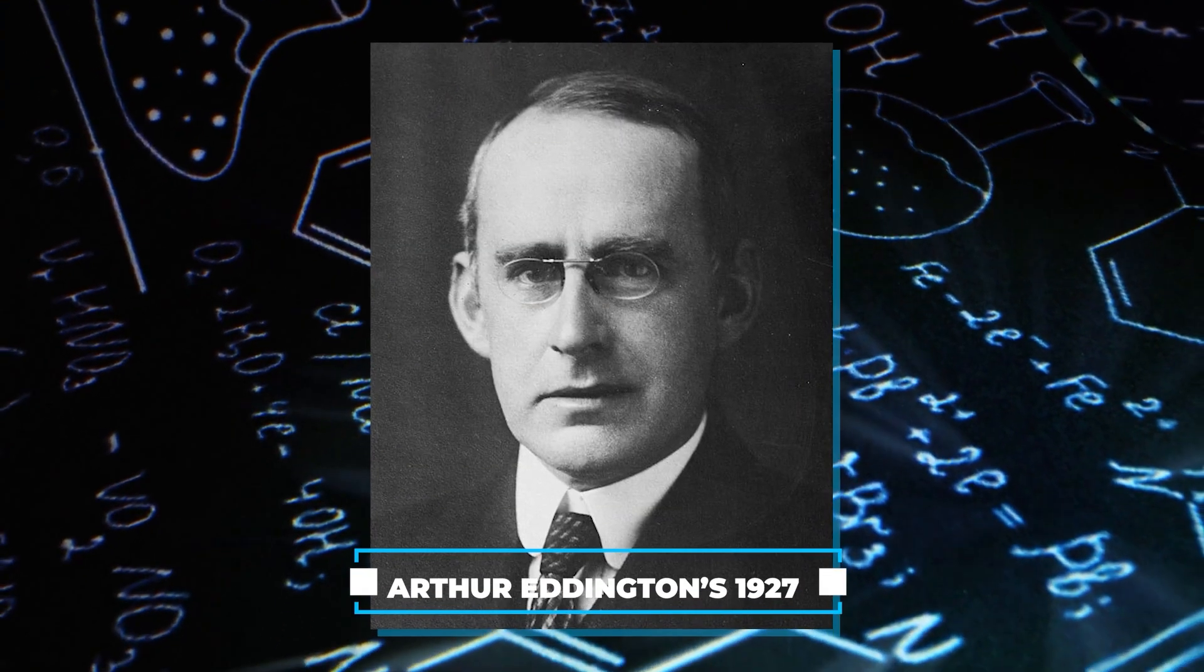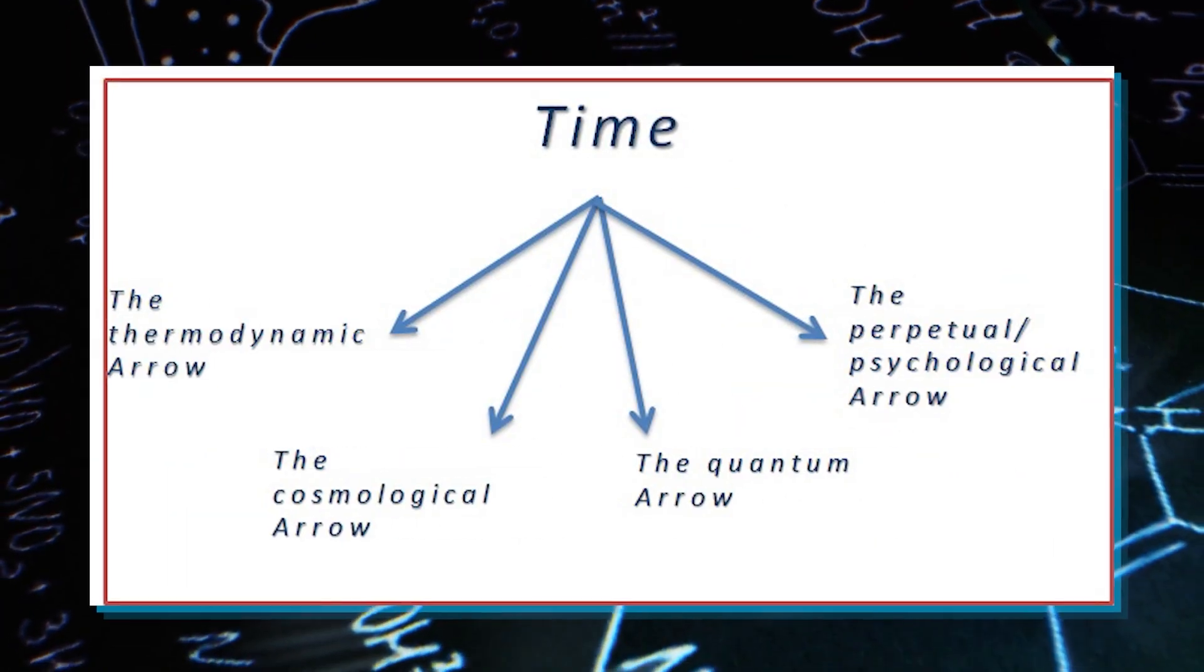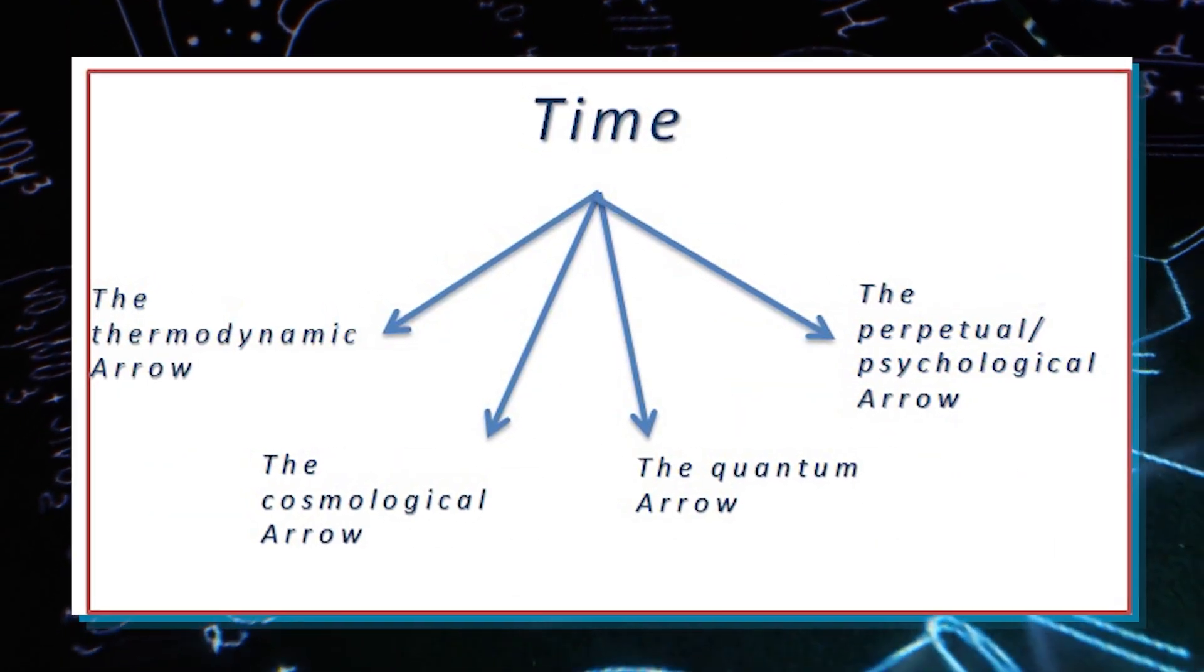Arthur Eddington's 1927 concept of the Arrow of Time, establishing the one-way direction of time, addresses the fundamental question of why time seems to flow in a singular direction.